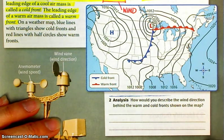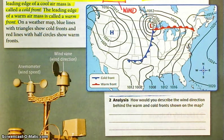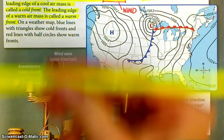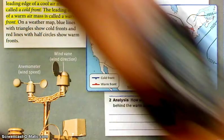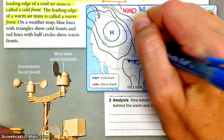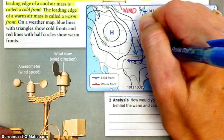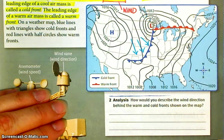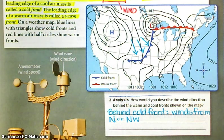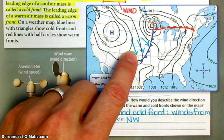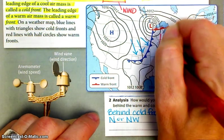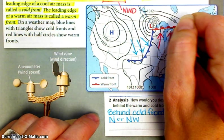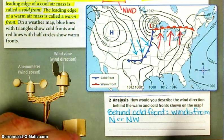How would you describe the wind direction behind the warm and cold fronts shown on the map? Well, behind the cold front, you're going to have wind from the north or northwest. Behind the warm front, which is going this way, winds are from the south.